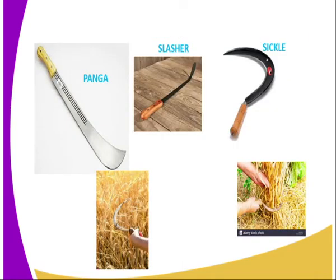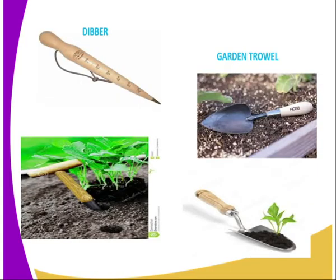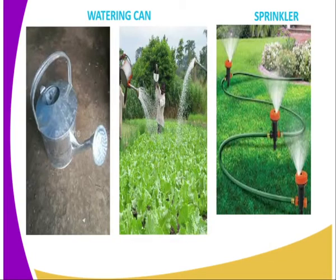Then we have the panga, jembe, and sickle. These are used when it comes to cutting of grass and vegetation during land preparation. Then we have the diba, which is normally used during transplanting for digging holes where the seedlings are placed. Then we have the garden trowel, which is used during transplanting to lift the seedlings with a heap of soil at the base of the seedling.